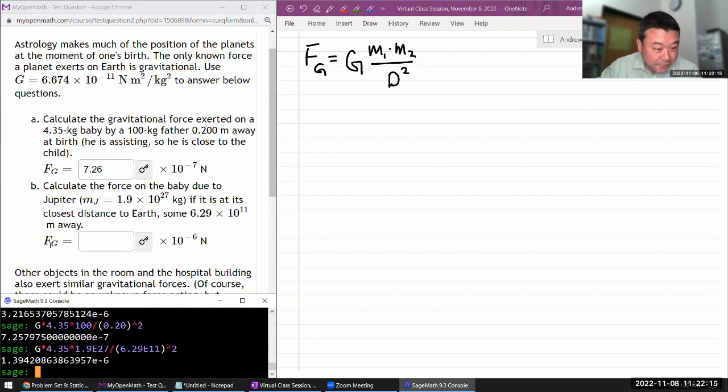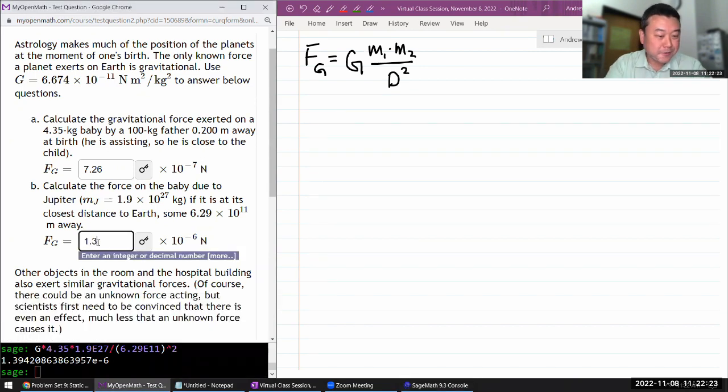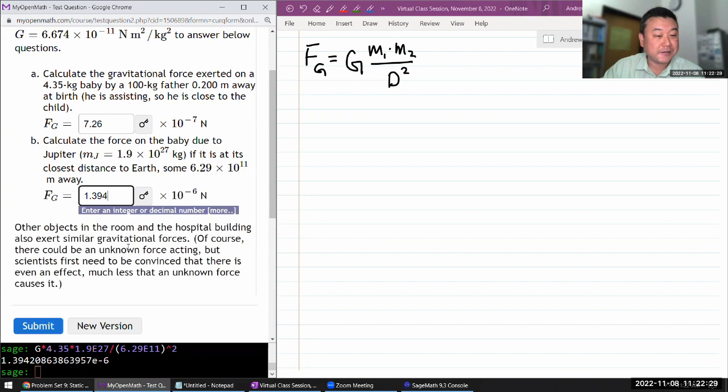With that, oh wow, it's actually larger, huh? Okay. Oh yeah, 10 to the power of minus 6. Yeah, so it's 1.39. So Jupiter exerts about double the amount of force that the father is exerting.